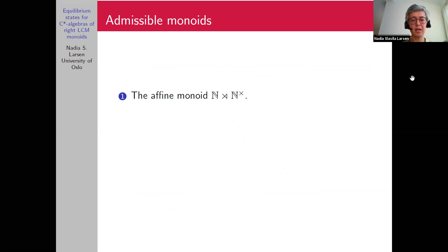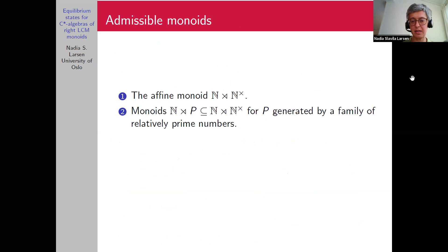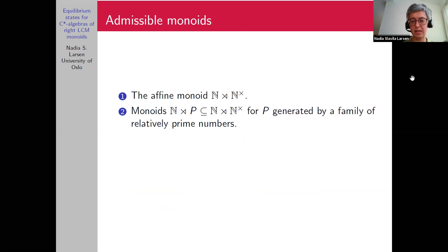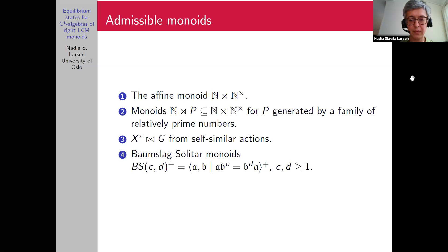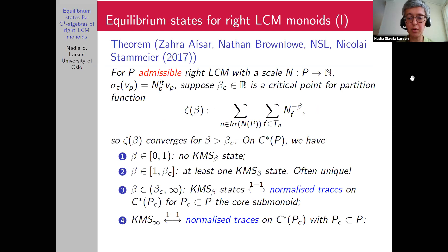Admissible monoids include: the affine monoid N⋊N× and variations where N× is replaced by subsemigroups generated by families of relatively prime numbers; monoids from self-similar actions via Zappa-Szép products; and Baumslag-Solitar monoids BS(C,D) where C and D have the same sign.